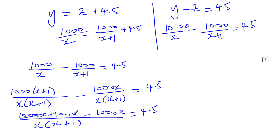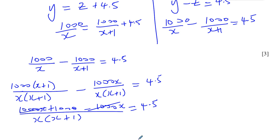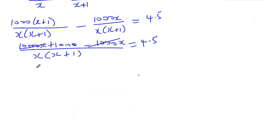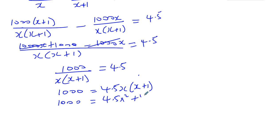So you have 1,000x plus 1,000 minus 1,000x equals 4.5. 1,000x minus 1,000x becomes 0x. So you've got here, if I go down further, 1,000 over x times x plus 1 equals 4.5. Now I can cross multiply, I can multiply both sides by x times x plus 1, in which case you'll be left with 1,000 here. And that will be 4.5 times x times x plus 1.